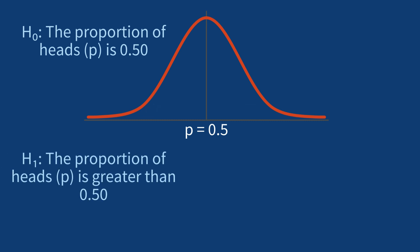The alternative hypothesis, on the other hand, proposes that the coin is biased, meaning the true proportion of heads is not equal to 50%.